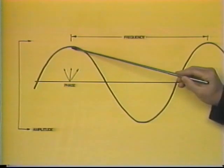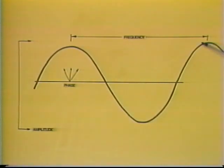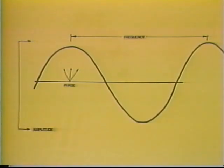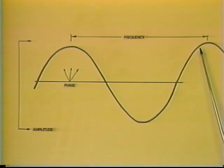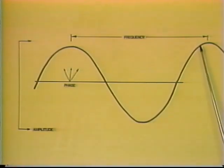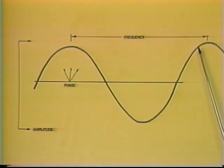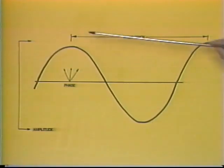The time between the peaks in the sine wave varies with the tone or pitch of the voice. We call the number of sine waves that occurs in one second the frequency. The higher the frequency, the higher the tone or pitch. The lower the frequency, the lower the tone or pitch.